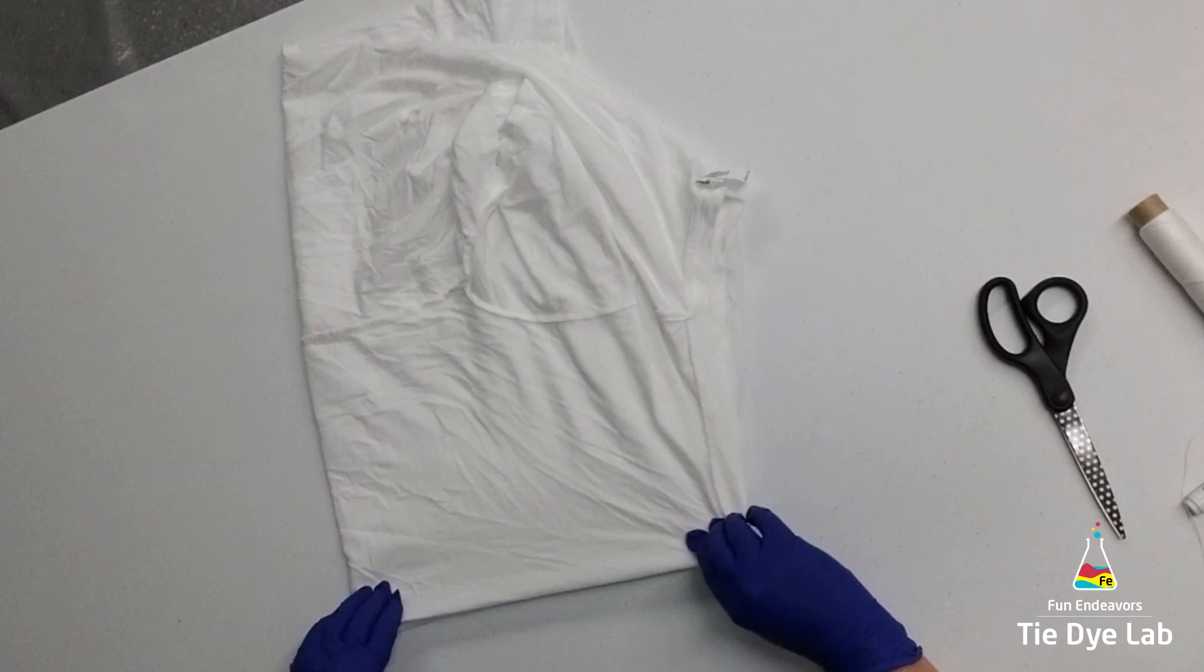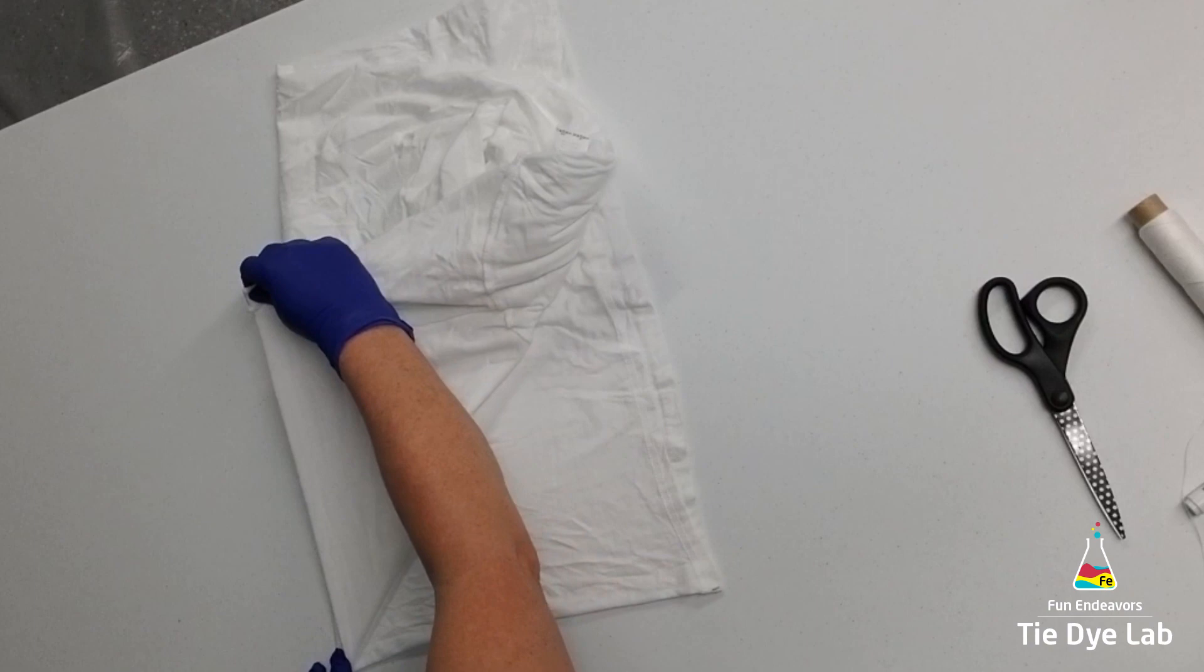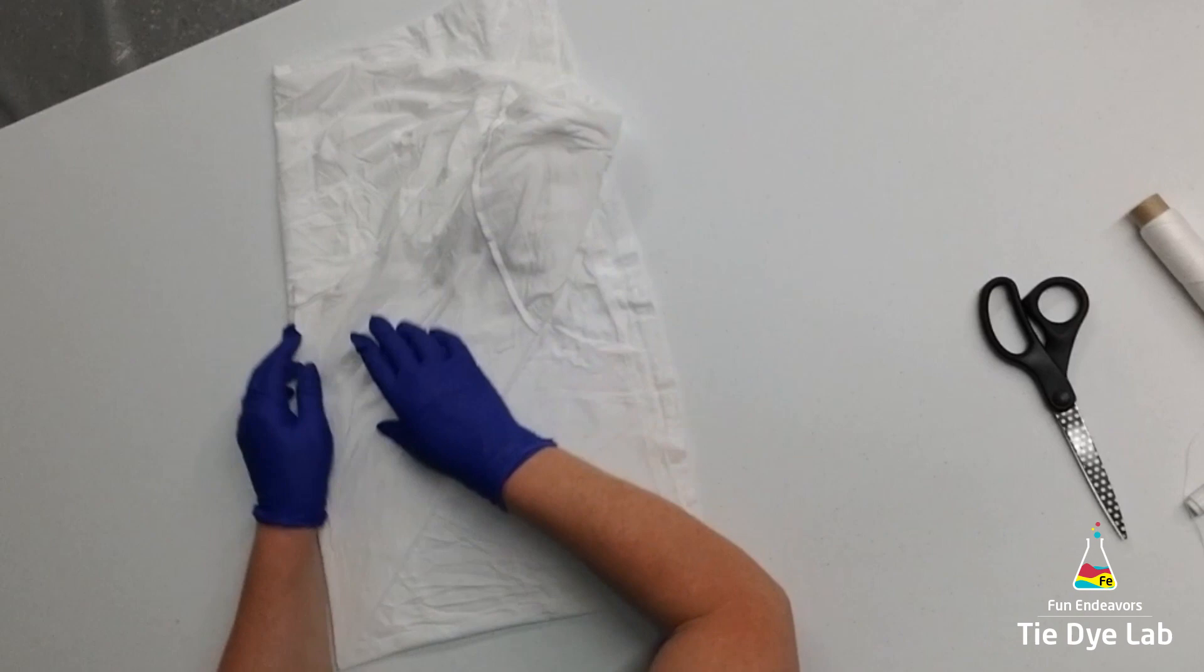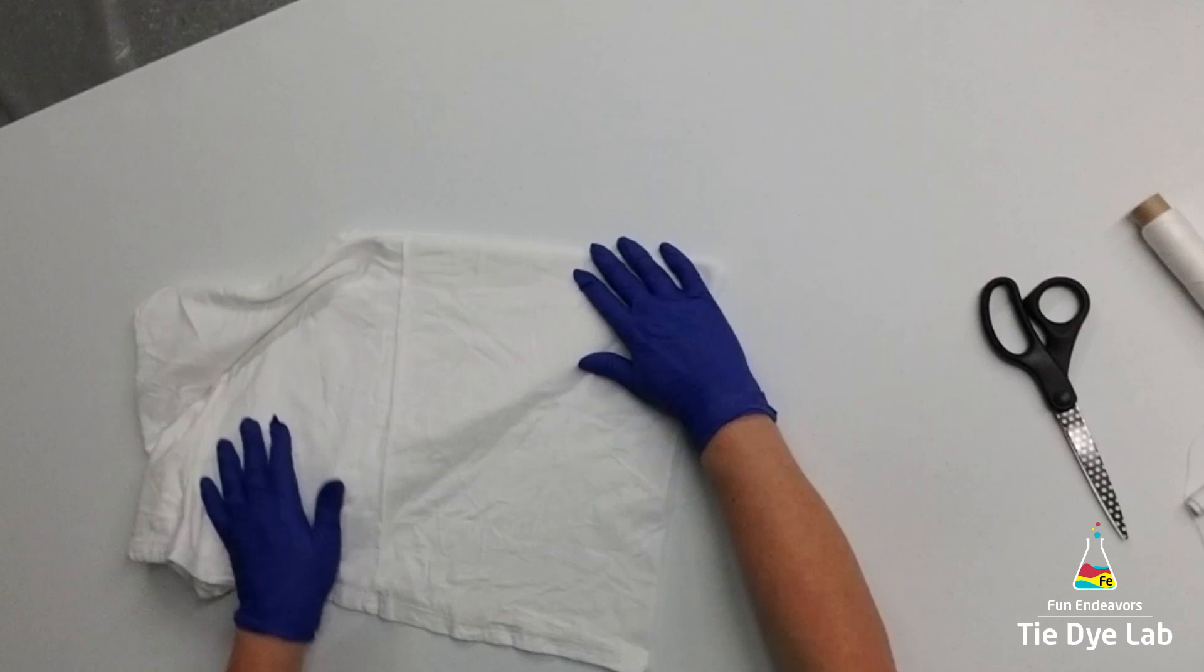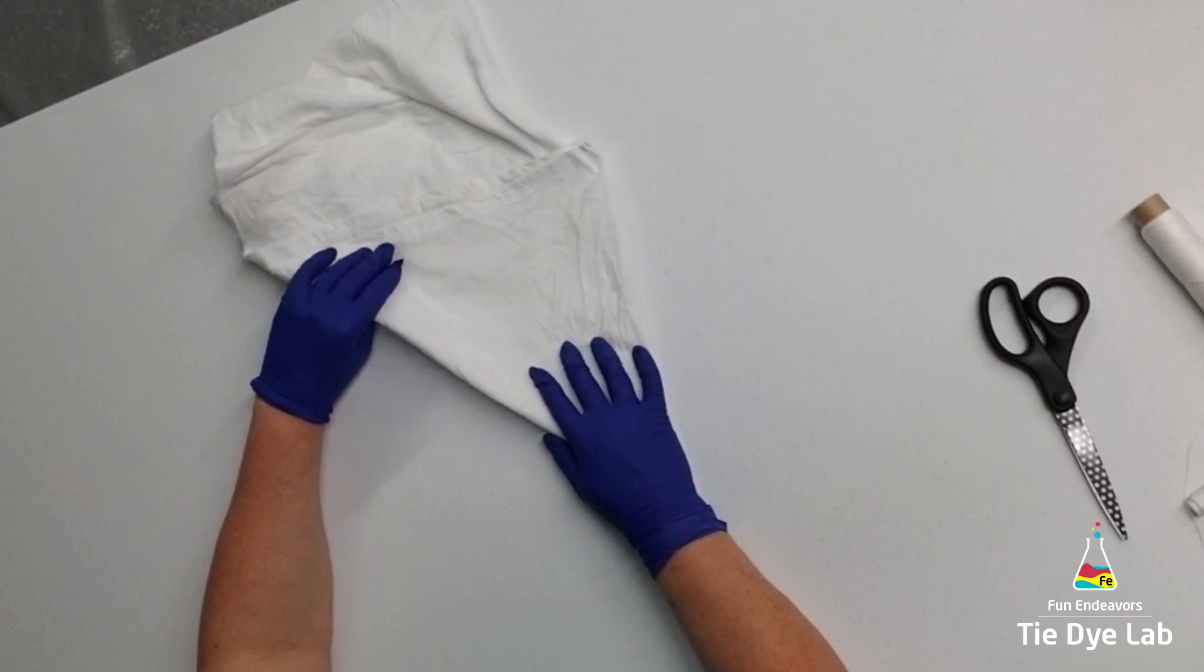Then I'm going to fold my shirt in half, and fold back one side. Flip my shirt over and fold back the other side, so it's kind of like you're beginning making a paper airplane.